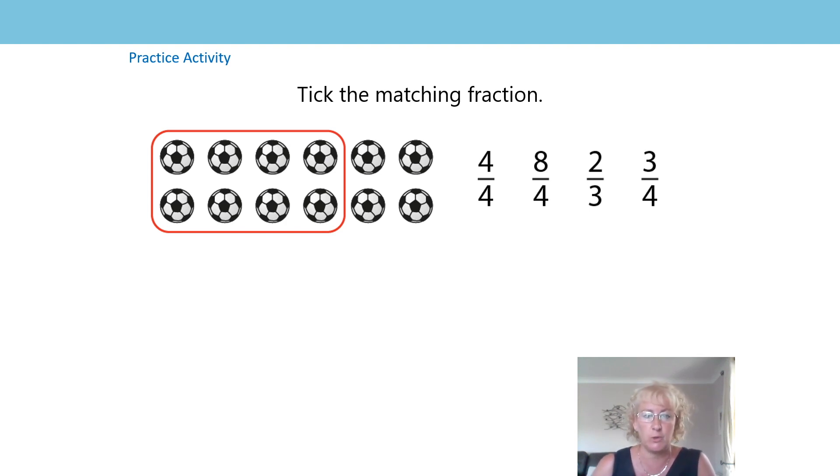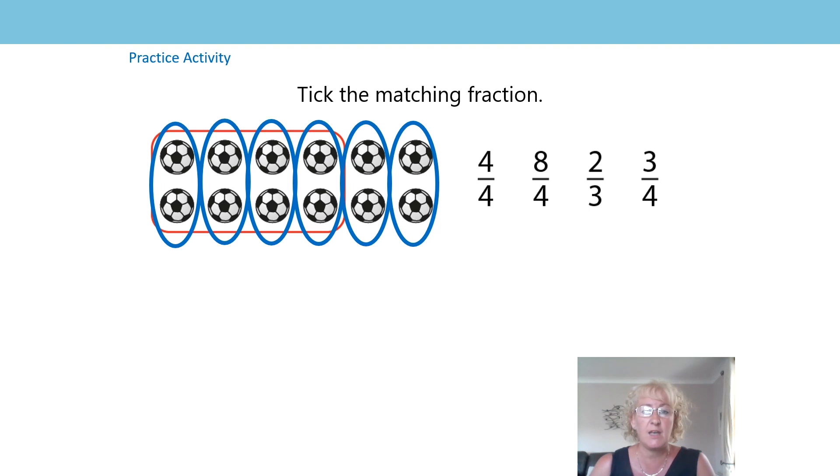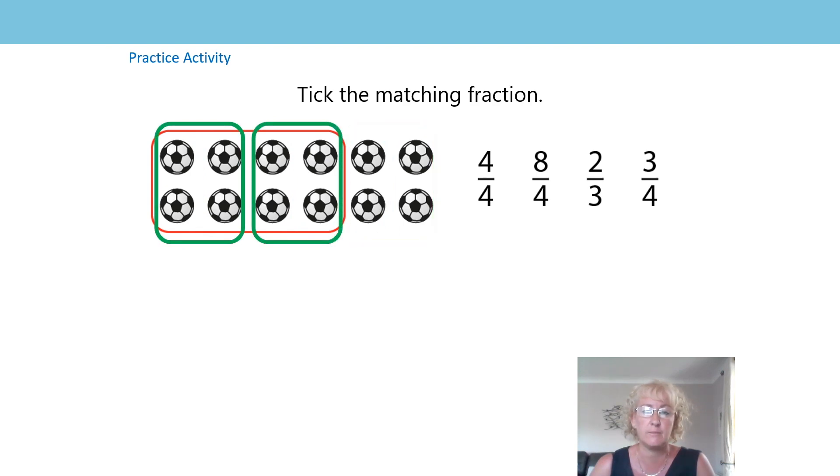So let's start with the footballs question. Which of the fractions is the correct notation? Let's begin by thinking how many equal parts we can see. We can see 12 equal parts because there are 12 footballs, but can you see 6 equal parts? And can you see 3 equal parts with equal groups of 4? So if there are 3 equal parts and 2 of those parts have been ringed, that means our answer of 2 thirds is the correct one.